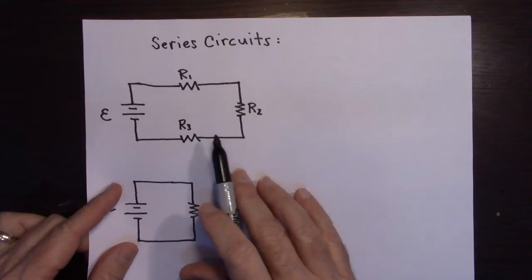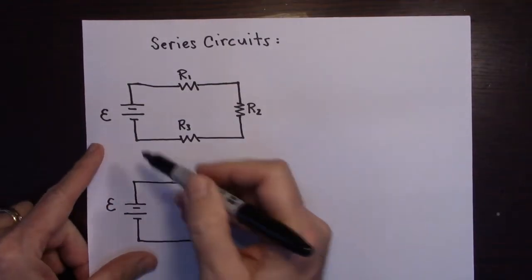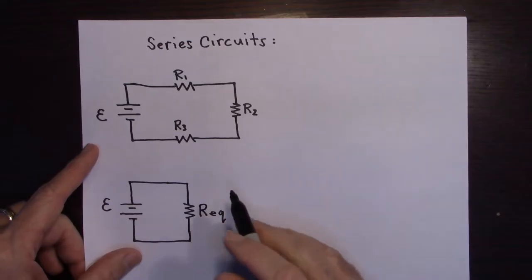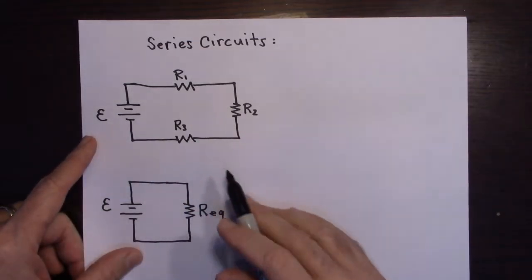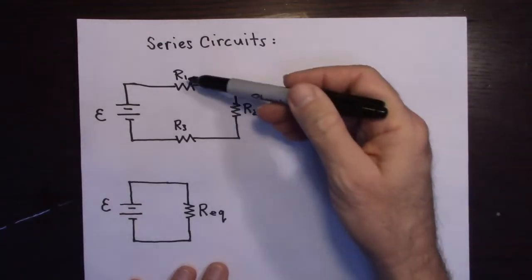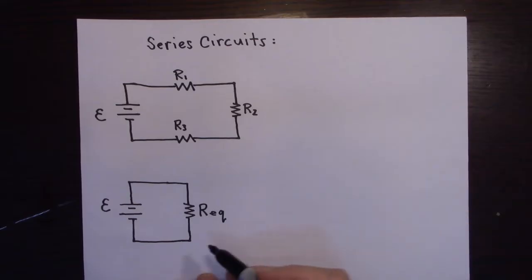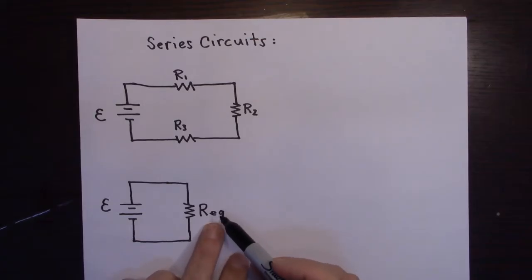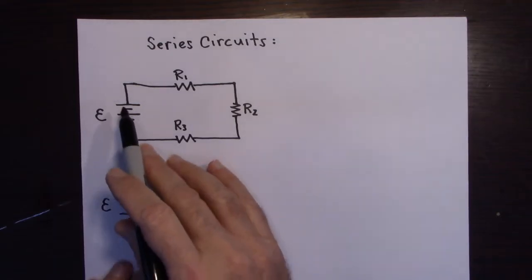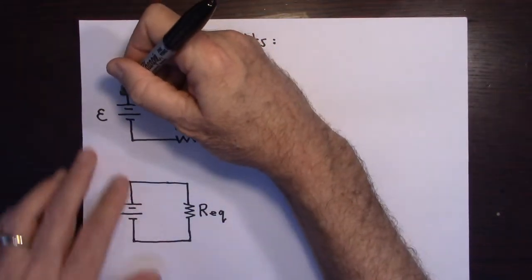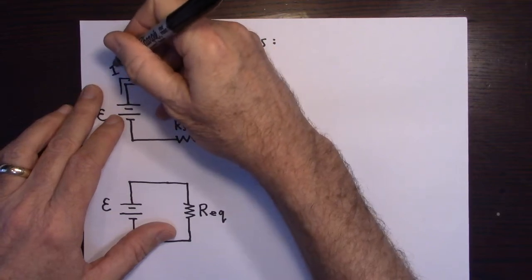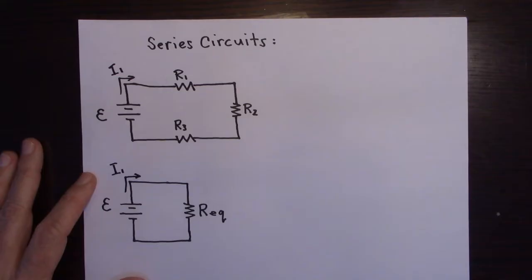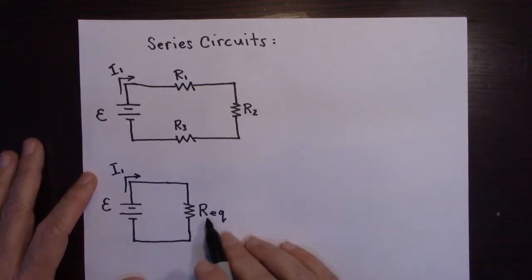The series circuit has three resistors R1, R2, and R3 in series — they follow one right after the other. The voltage of the battery is this fancy E, which stands for EMF — it's a voltage. The idea is that we'd like to replace all three resistors with a single equivalent resistance R_equivalent, which is equivalent because if we put it in, you'll get the same current through that battery.